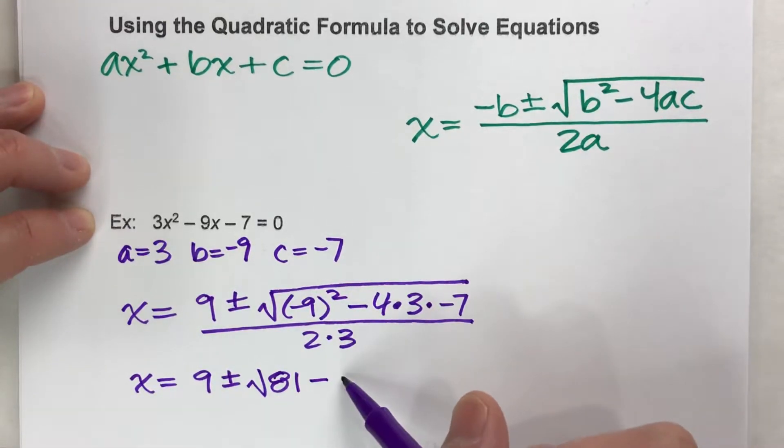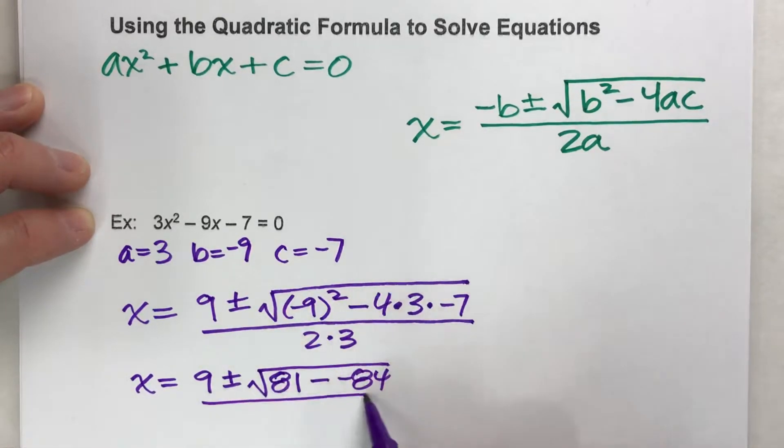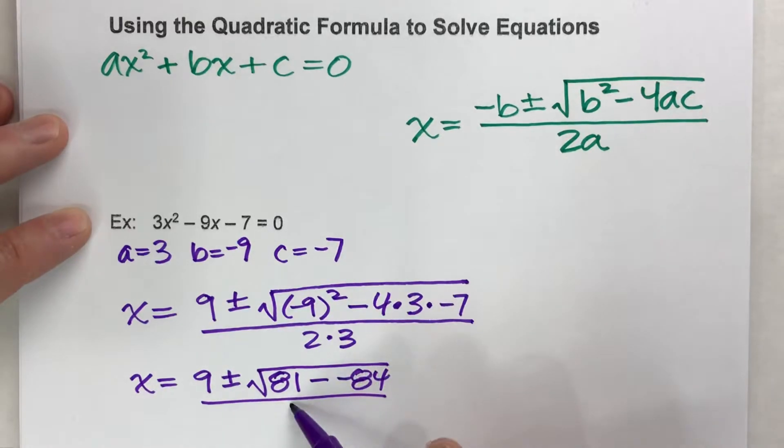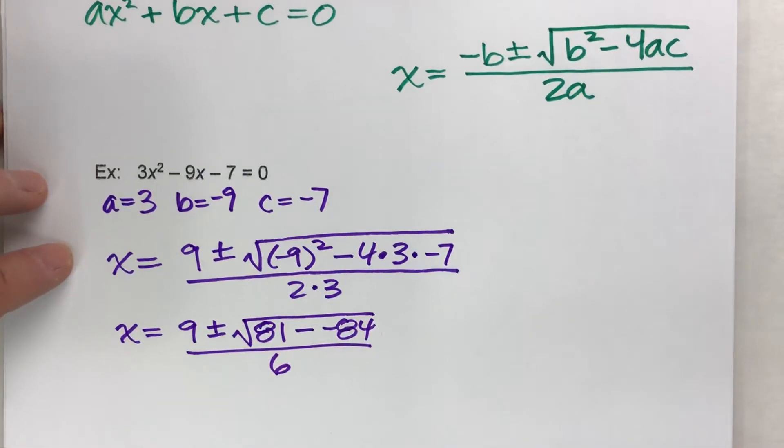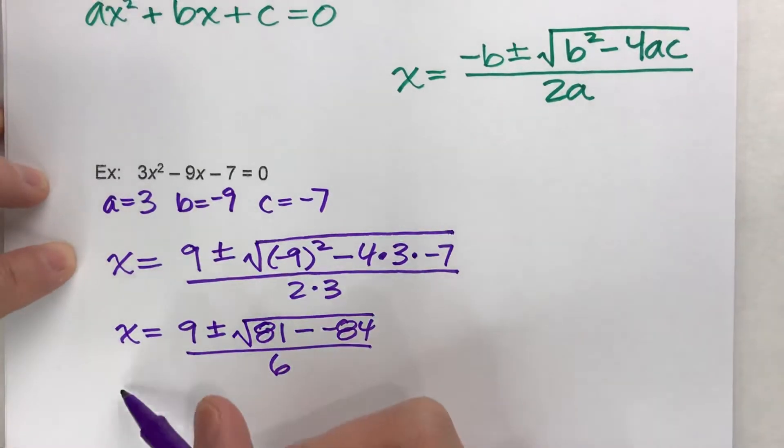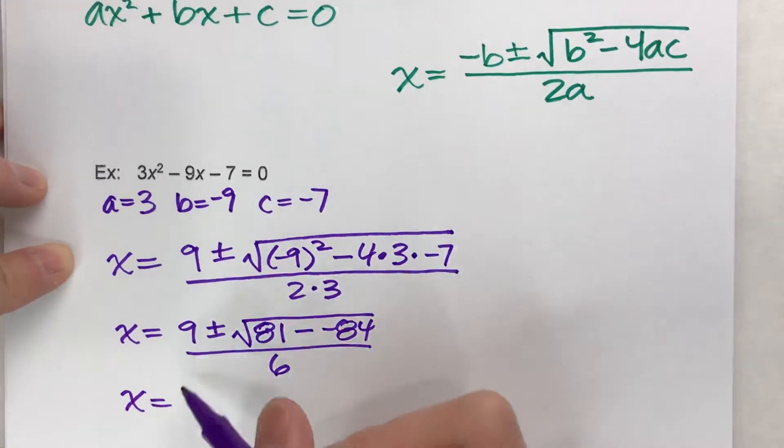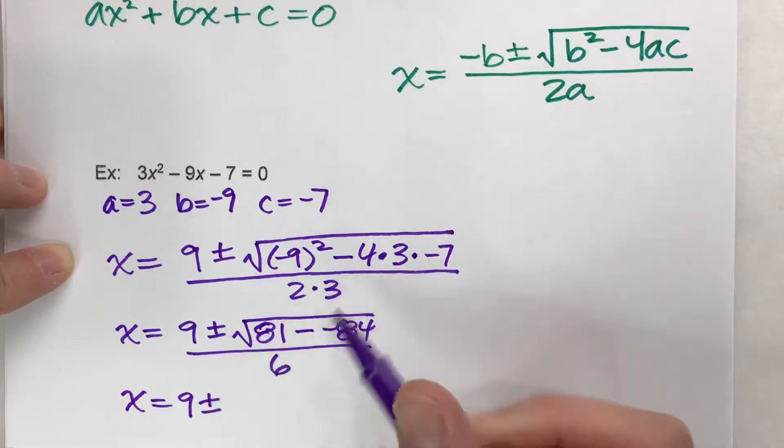4 times 3 is 12 times negative 7 is negative 84. So this is minus negative 84. All divided by 2 times 3, which is 6. So this doesn't look so bad. We're starting to simplify this down a bit.